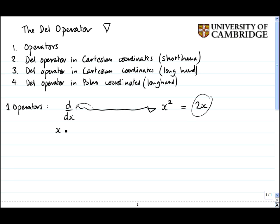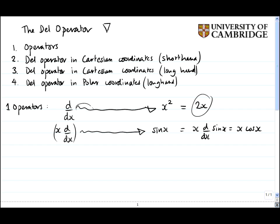I might define another operator as being x·d/dx — I'll put it in brackets to emphasise it's one entity. If I've got a sin(x) lying around and this operator acts on it, I get x·d/dx of sin(x), which is just x·cos(x). Note that the order in which I write x and d/dx is important. If I defined another operator to be d/dx·x, the d/dx acts straight away on the x, giving me 1 — it's not an operator at all, just the quantity 1.